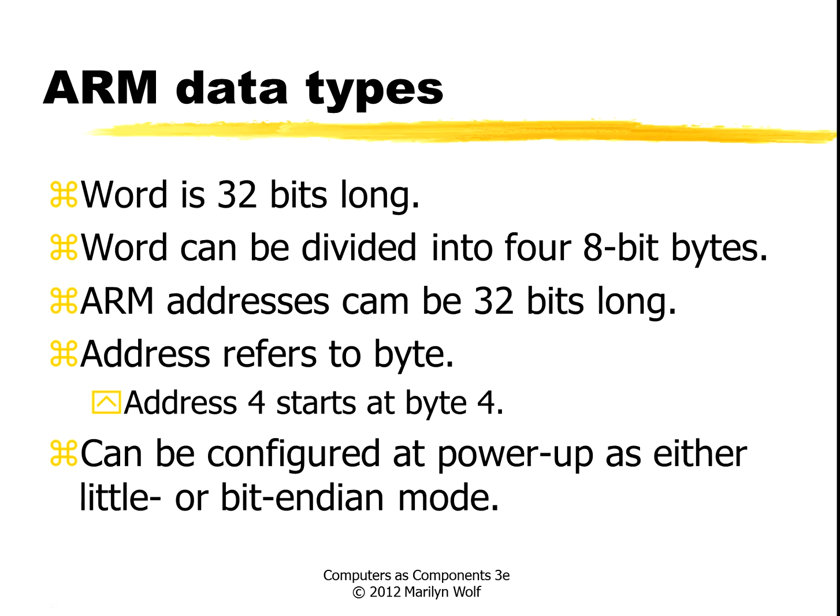An ARM word is 32 bits long, and it can be divided into four 8-bit bytes. An address is also 32 bits long. These addresses refer to bytes, so for instance address 4 would refer to byte 4, or the second word in memory. The machine can be configured at power-up to be either little-endian or big-endian.